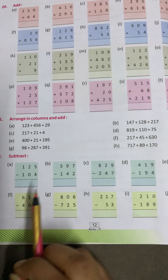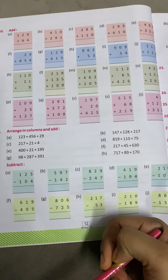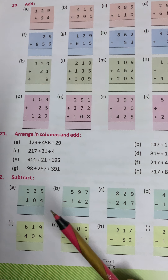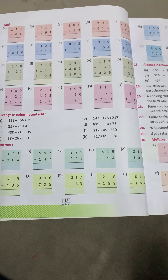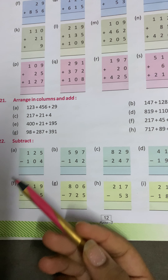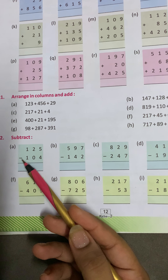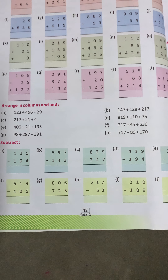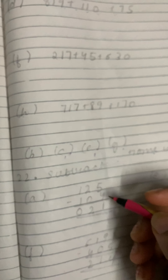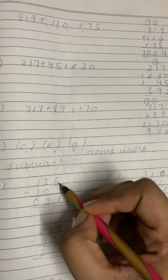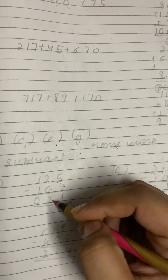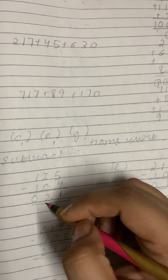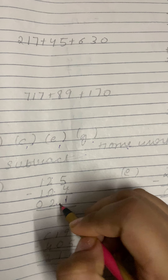Then coming to question number 22, which is subtract. We have been doing addition; now here we will subtract, that is, minus. Let's start with question 1: 125 minus 104. So 5 minus 4 is 1, 2 minus 0 is 2, and 1 minus 1 is 0. So the answer is 21.